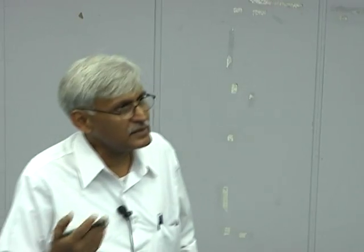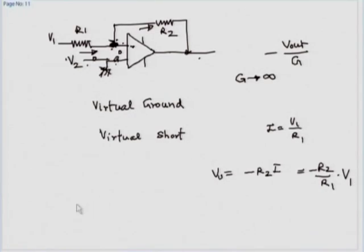We have a linear device. The output is a linear function of input, and the gain of this device is negative and is given by R2/R1. This is called an inverting configuration or inverting amplifier.